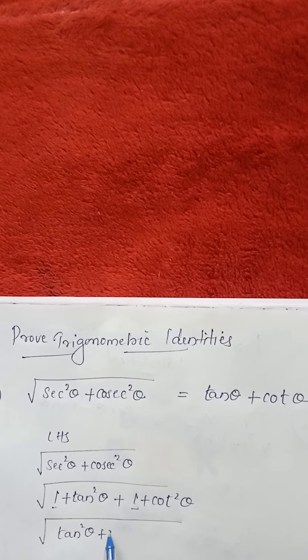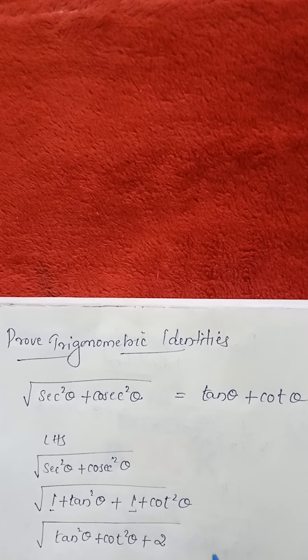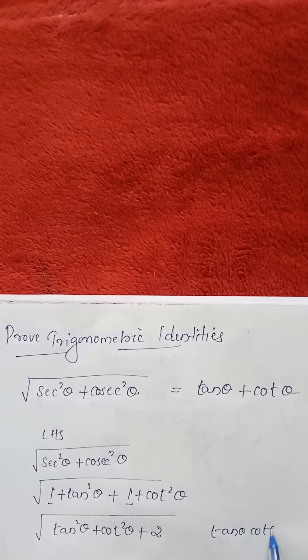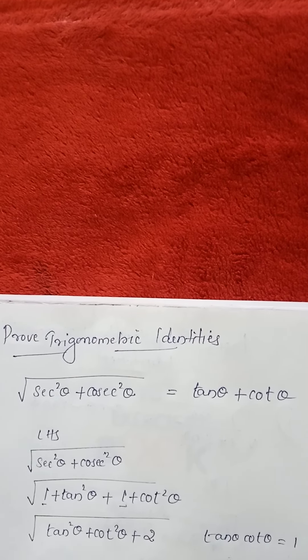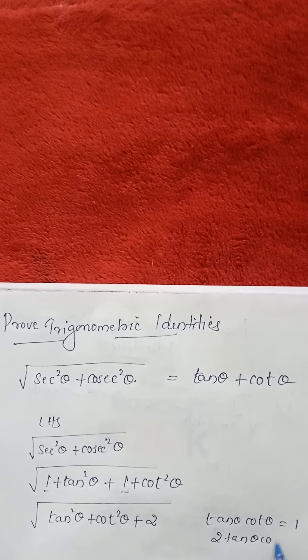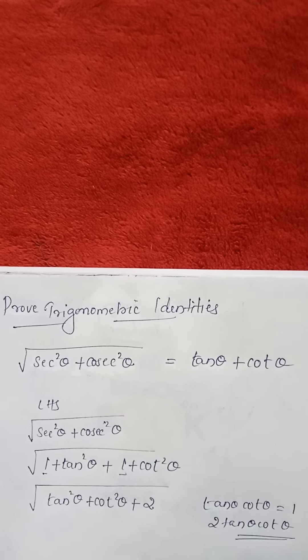Tan square theta plus cot square theta plus 1 plus 1 is 2. So as we know, what is tan theta into cot theta? That is equals 1. So 2 means we have to write 2 tan theta cot theta. So we have to substitute 2 with tan theta cot theta.